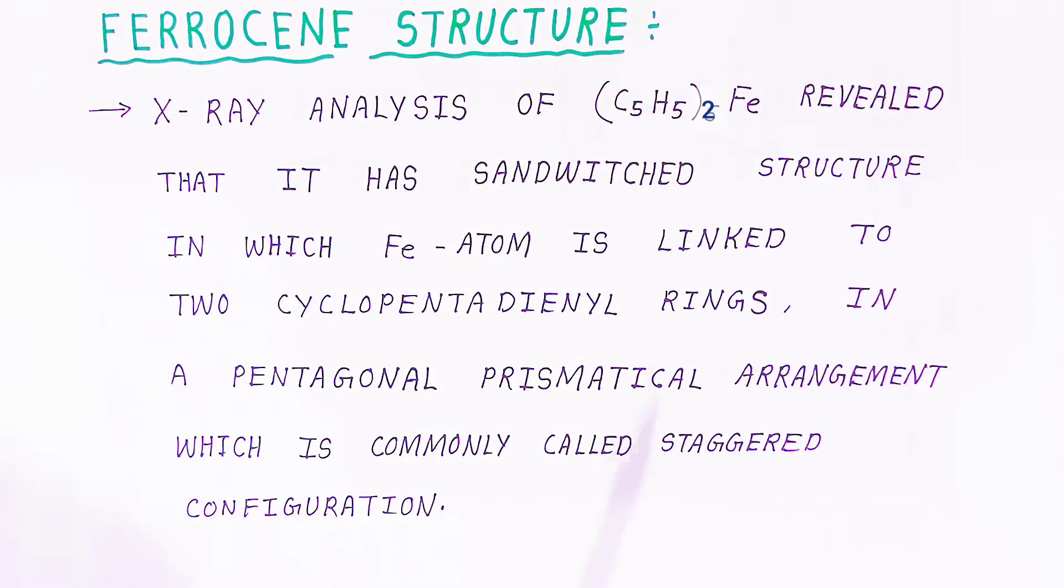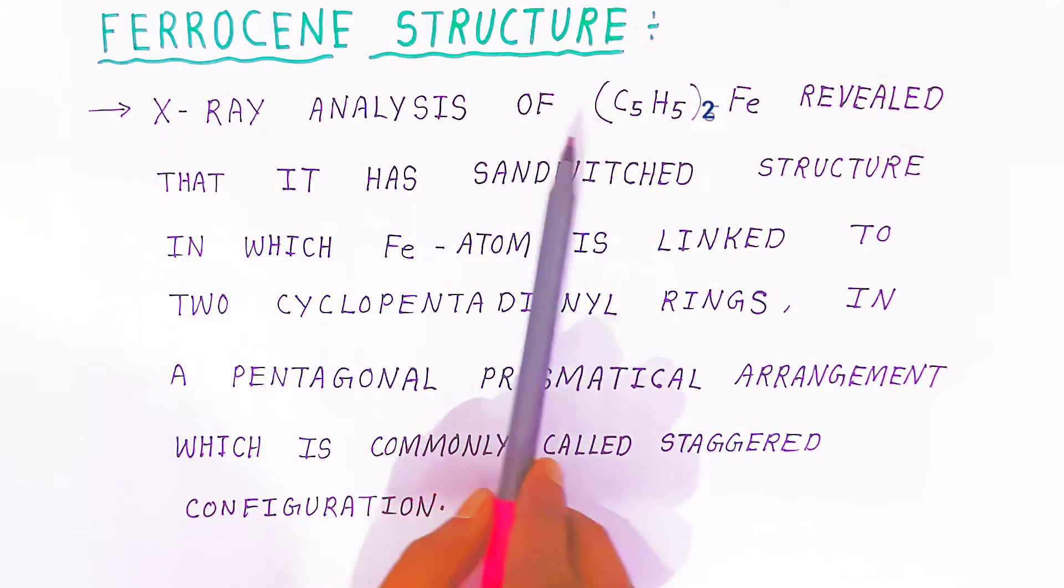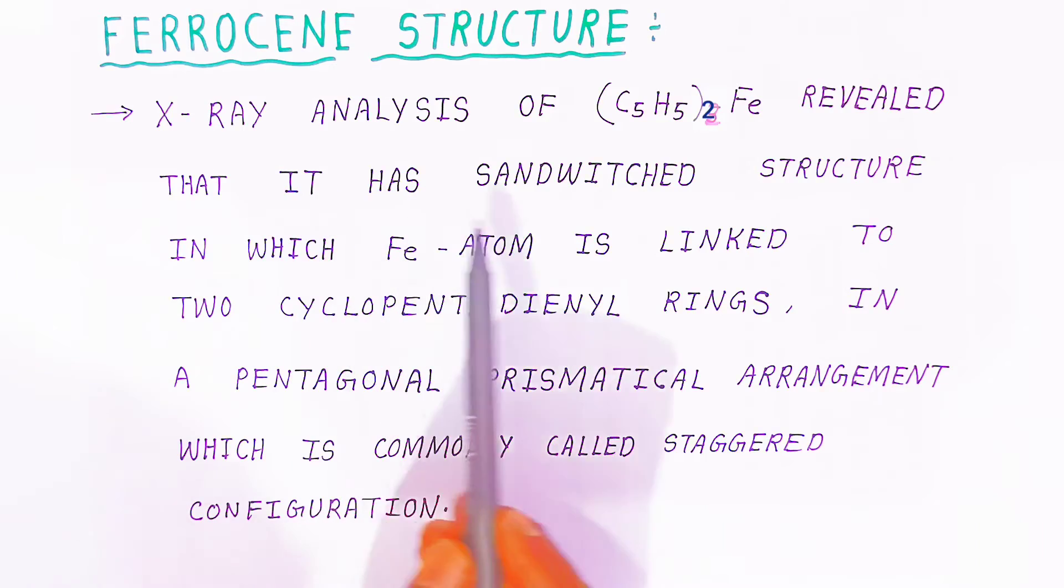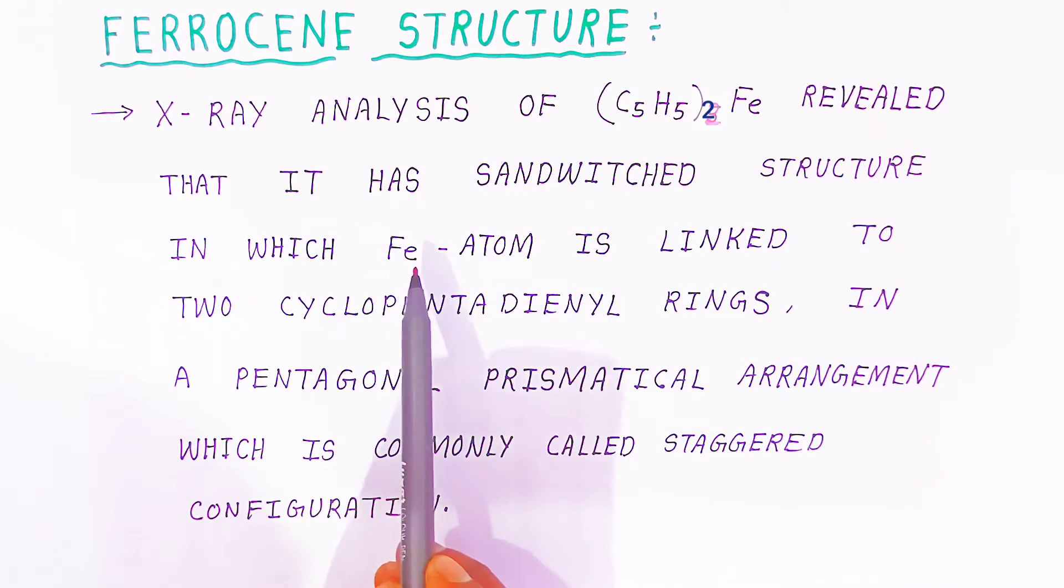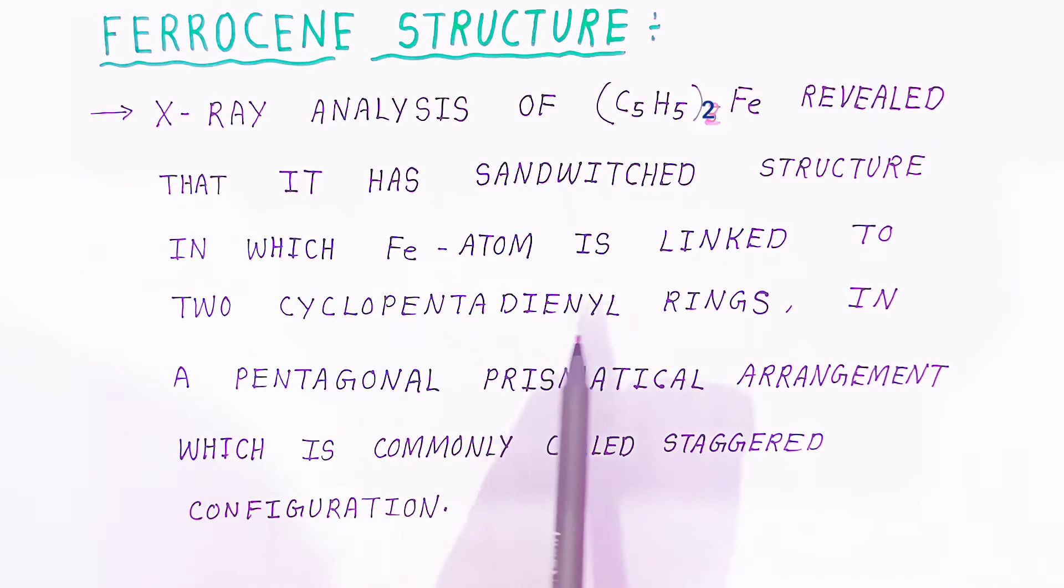Now we are going to see structure of ferrocene. X-ray analysis of ferrocene reveals that it is a sandwiched structure in which the iron atom is linked to two cyclopentadienyl rings. Iron atom is sandwiched between these two cyclopentadienyl rings.